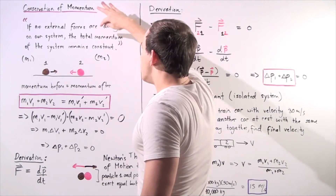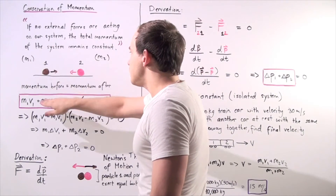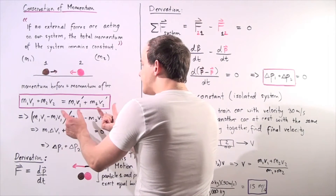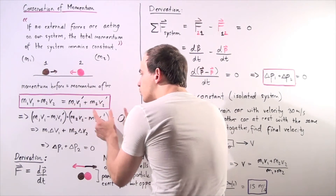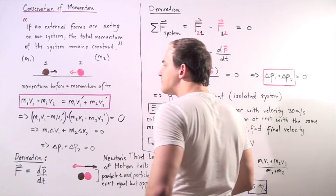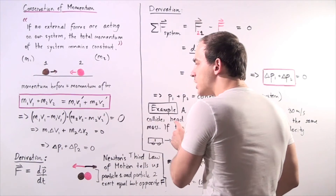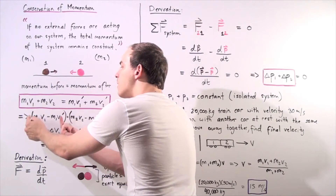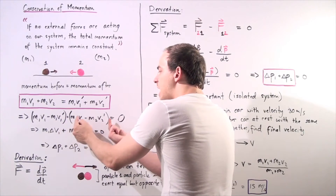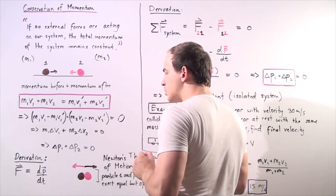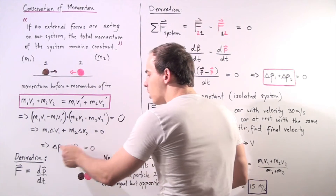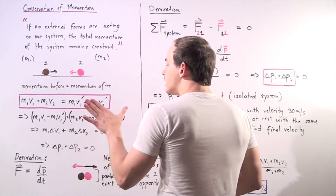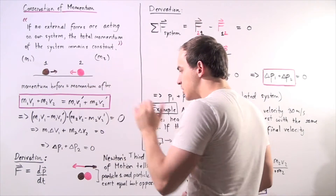The total momentum of the system — these two particles — remains constant. Notice we can bring both terms to the left side, giving us the following equation: the change in momentum of object one plus the change in momentum of object two is equal to zero. That is exactly the law of conservation of momentum.